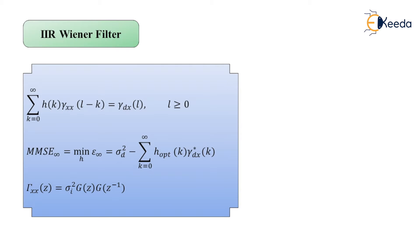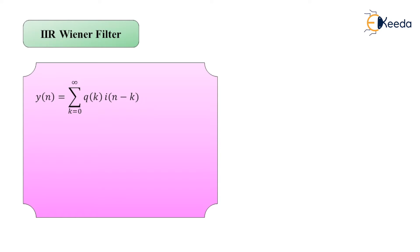For the IIR Wiener filter case, the optimum filter can be viewed as a cascade of the whitening filter 1/G(z) with a second filter Q(z), whose output y(n) is identical to the output of the optimum Wiener filter. Since y(n) = summation from k=0 to infinity of q(k)·i(n−k), where i(n) is the innovations process, and since error e(n) = d(n) − y(n), applying the orthogonality principle yields a new form of the Wiener-Hopf equation.